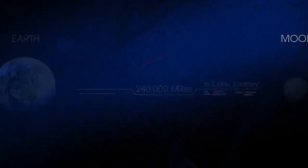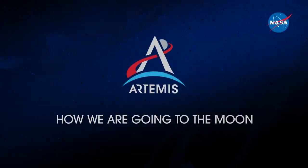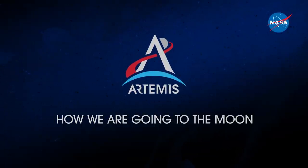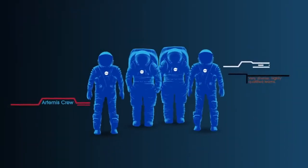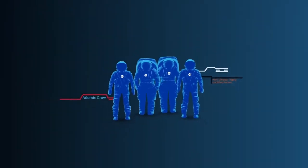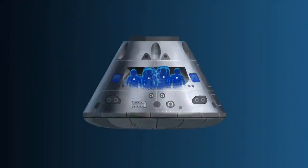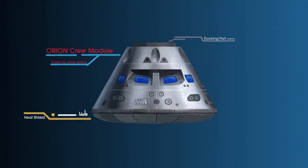So, what will an Artemis mission look like? Everything is designed and tested with our most important element in mind, the astronauts. This is their deep-space, human-rated spacecraft called Orion, built in three parts.